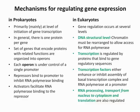One of the exam questions was actually the fourth bullet — knowing that in prokaryotes, each operon is under control of a single promoter. Repressors bind to promoters to inhibit RNA polymerase binding, and then activators activate or facilitate RNA polymerase binding to the repressor.